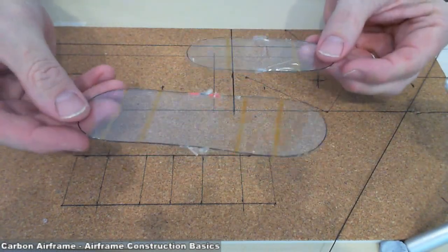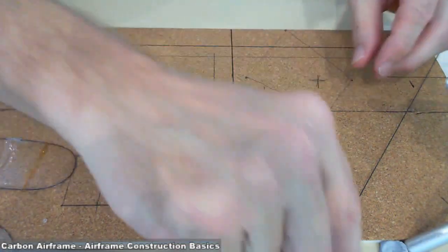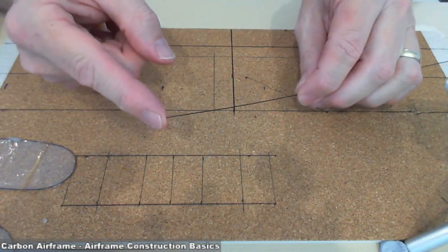For example, your horizontal stabilizers. Okay, you're going to start off with a piece of carbon. I'm going to use 0.5mm carbon here.